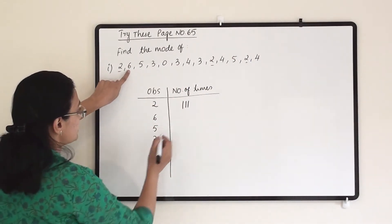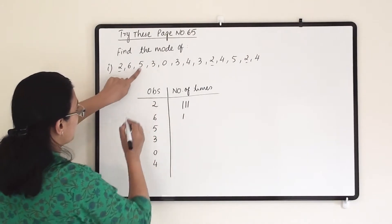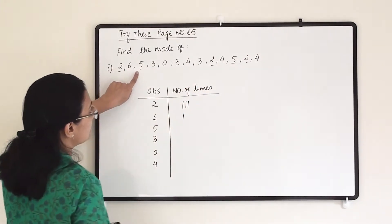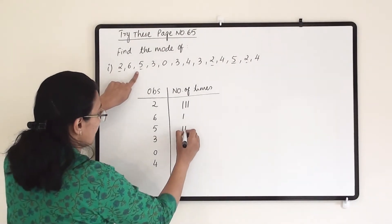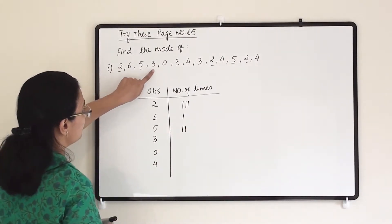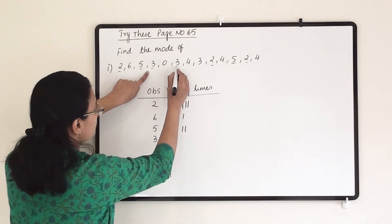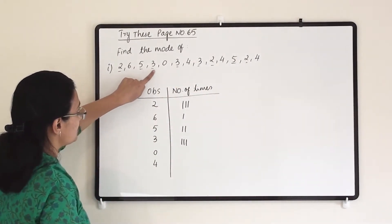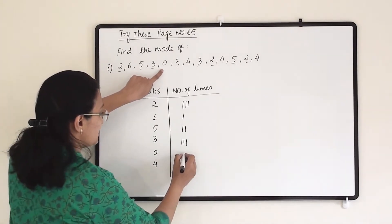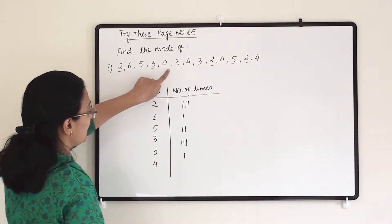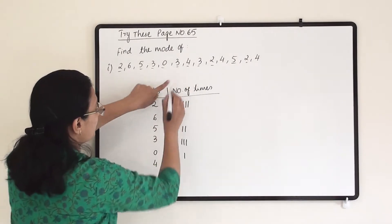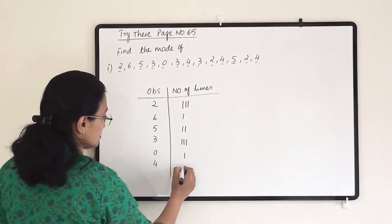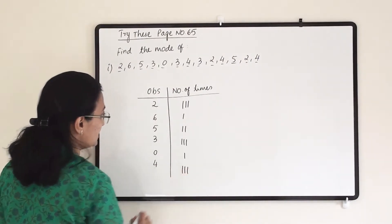Then six — six is coming only once. Then five — five is coming twice. Then three — three is coming three times in these observations. Then zero — zero is coming only once. Then four — four is coming three times in these observations.